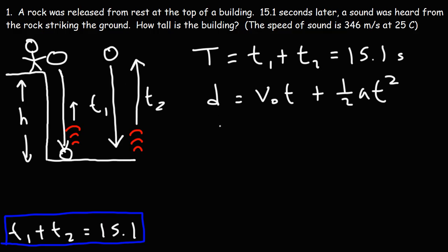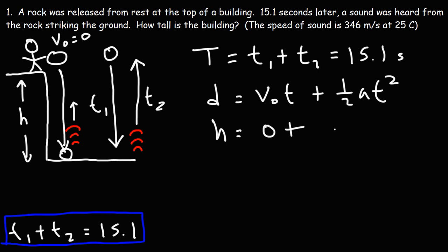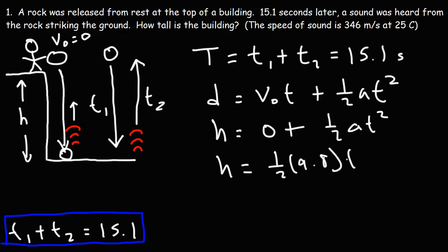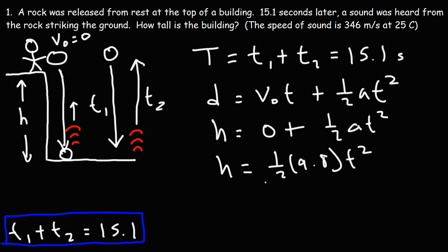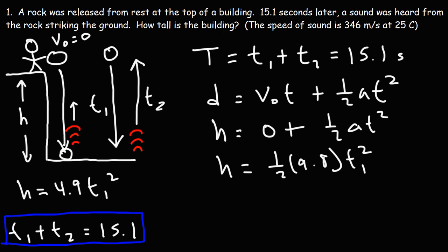The displacement during the first part equals the height of the building, because that's how far the ball travels. Since the ball is released from rest, the initial velocity in the y-direction is zero. So we have H equals one-half a t-squared. The acceleration due to gravity is 9.8, and since we're using a positive value for H we use a positive value for a as well. So the height of the building equals 4.9 times T1 squared.